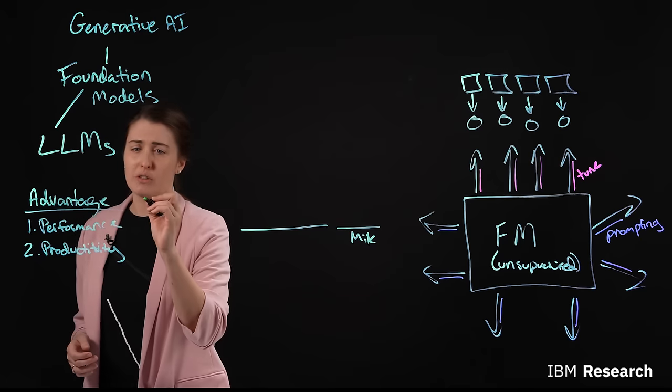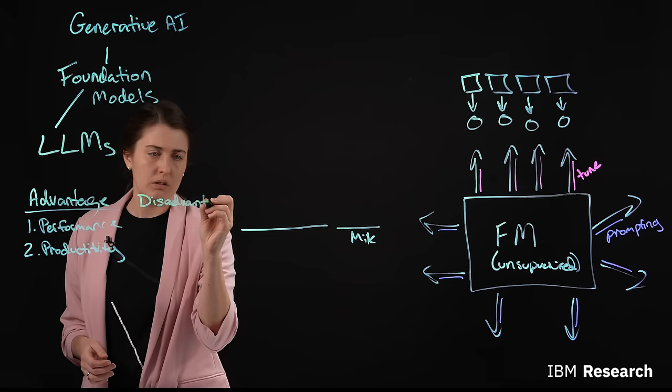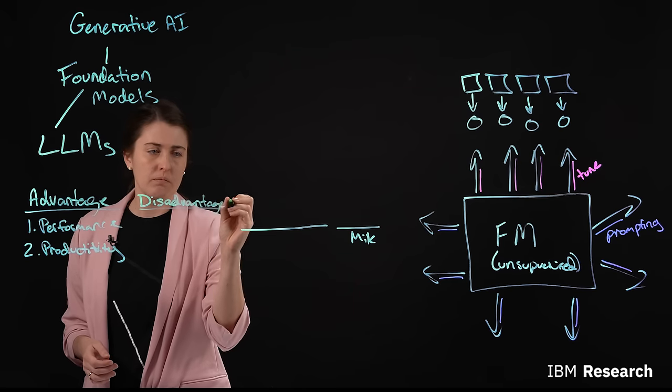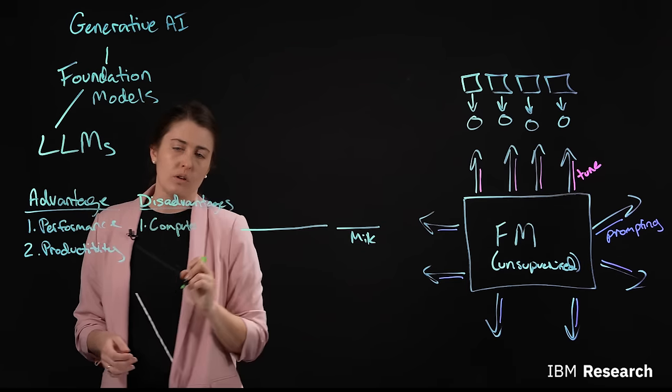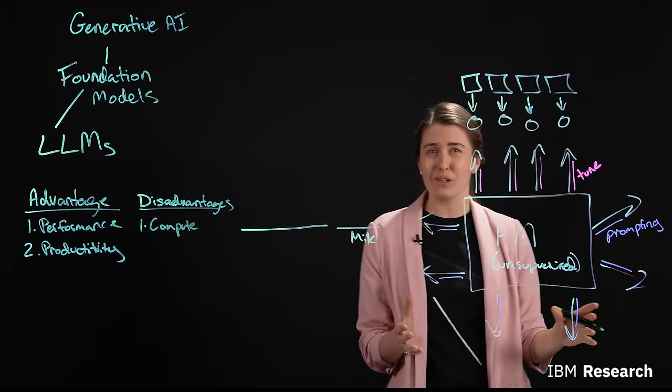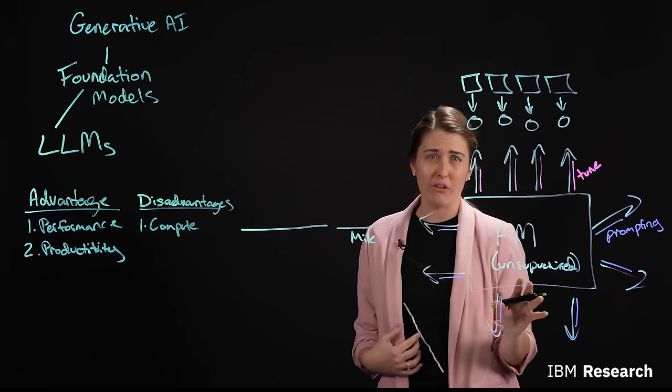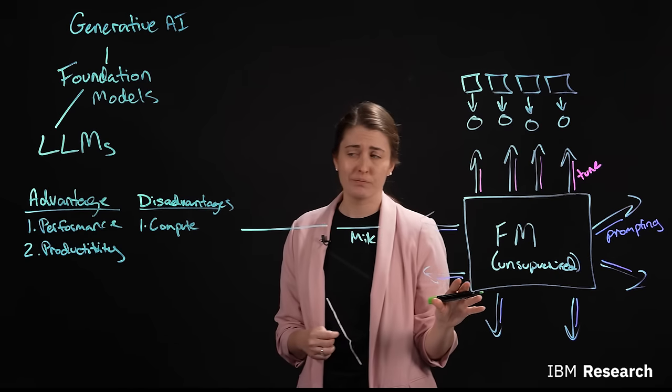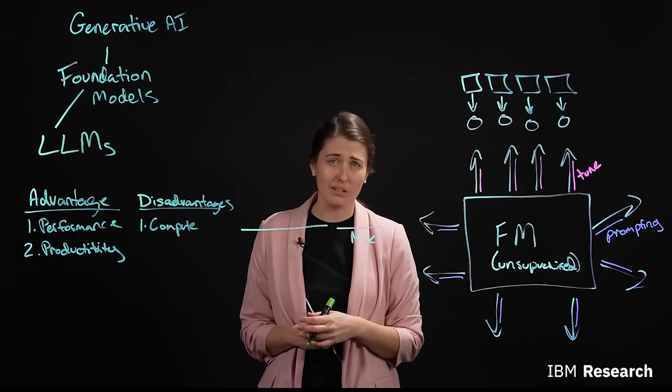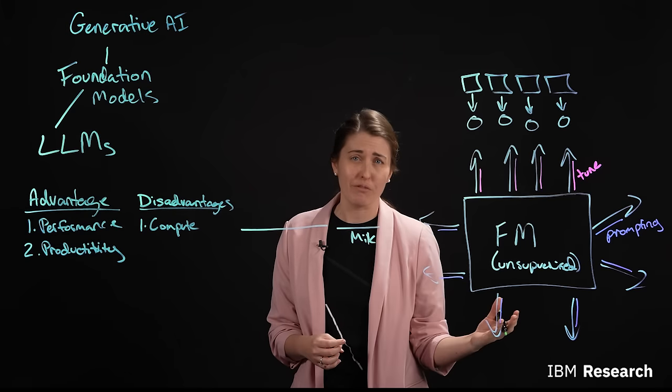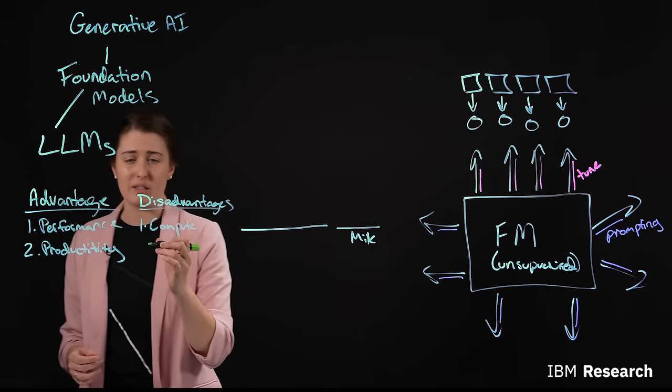With these advantages, there are also some disadvantages that are important to keep in mind. And the first of those is the compute costs. So the penalty for having this model see so much data is that they're very expensive to train, making it difficult for smaller enterprises to train a foundation model on their own. They're also expensive, by the time they get to a huge size, a couple billion parameters, they're also very expensive to run inference. You might require multiple GPUs at a time just to host these models and run inference, making them a more costly method than traditional approaches.